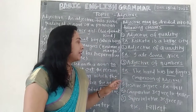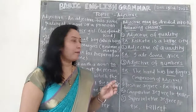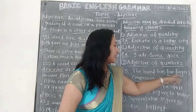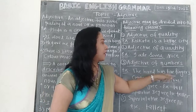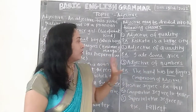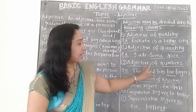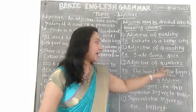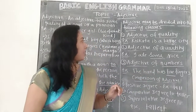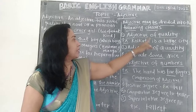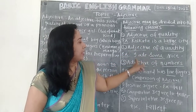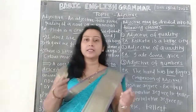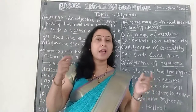Third is adjective of numbers. Example: The hand has five fingers. How many fingers? Five. The number 'five' tells how many, so 'five' is the adjective of number in this sentence. Now let's see the comparison of adjectives.